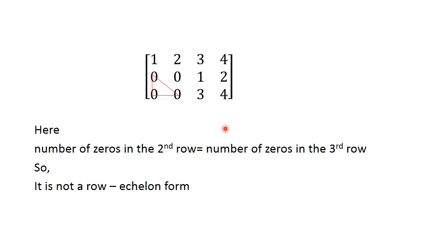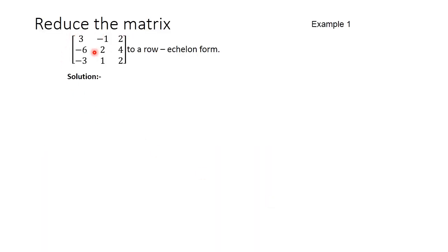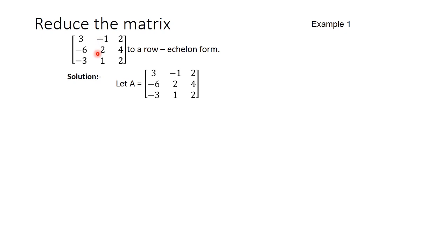Now let us solve some problems using row echelon form. First problem: reduce the matrix [3, -1, 2; -6, 2, 4; -3, 1, 2] into row echelon form. We consider the given matrix as A, so A is equal to [3, -1, 2; -6, 2, 4; -3, 1, 2].